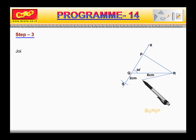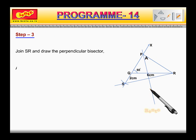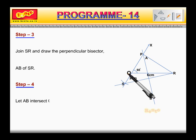Join SR and draw the perpendicular bisector AB of SR. Step 4. Let AB intersect QX at P. Join PR.